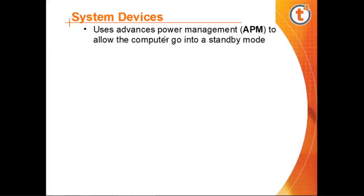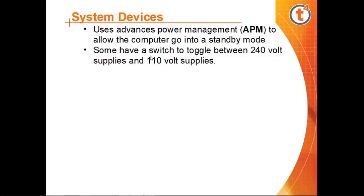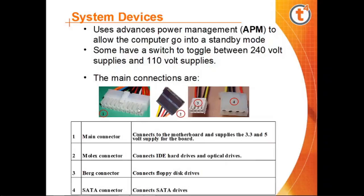Advanced Power Management (APM) allows computers to enter standby mode. In standby mode, the device is receiving power but is not actively running — the power is on but the system is idle. Some power supplies have a switch to toggle between 240-volt and 110-volt supplies.